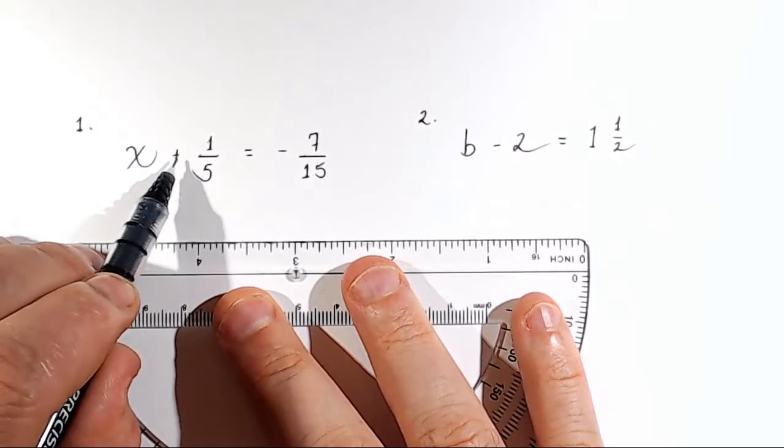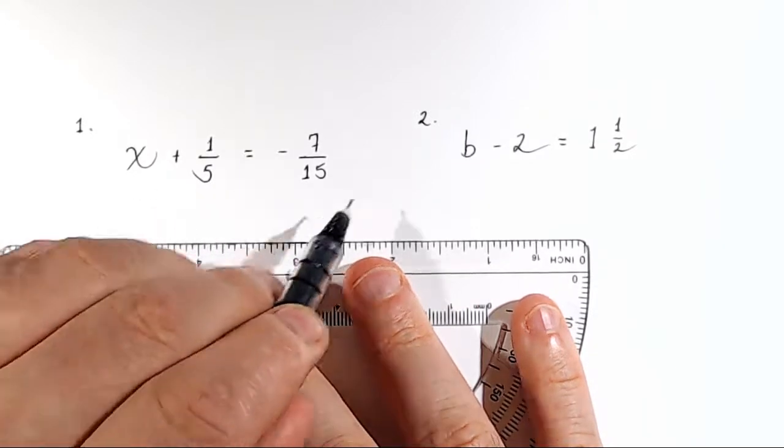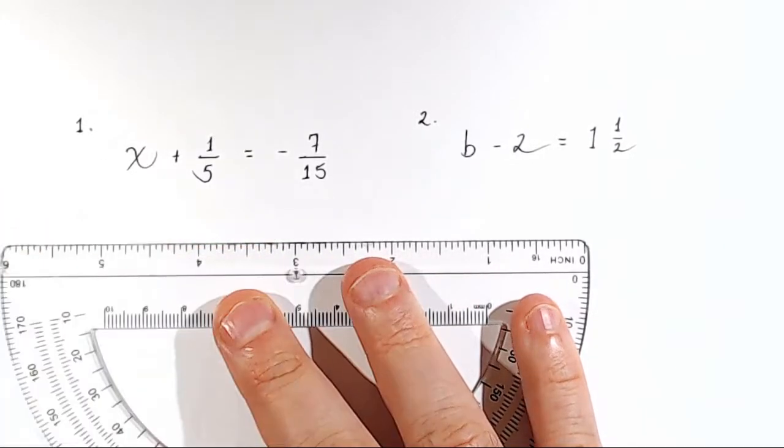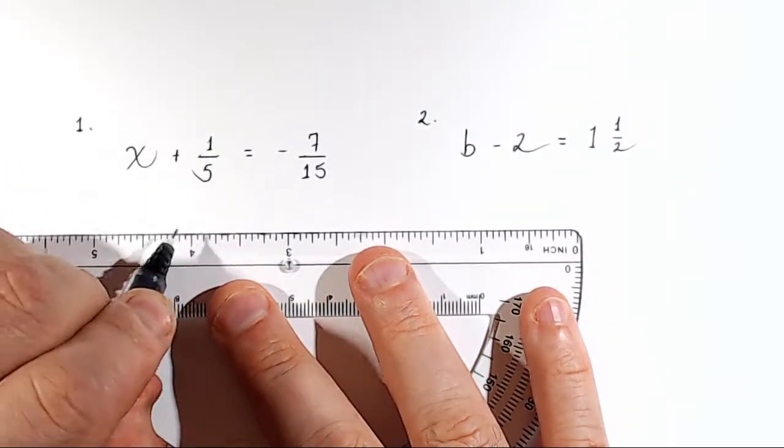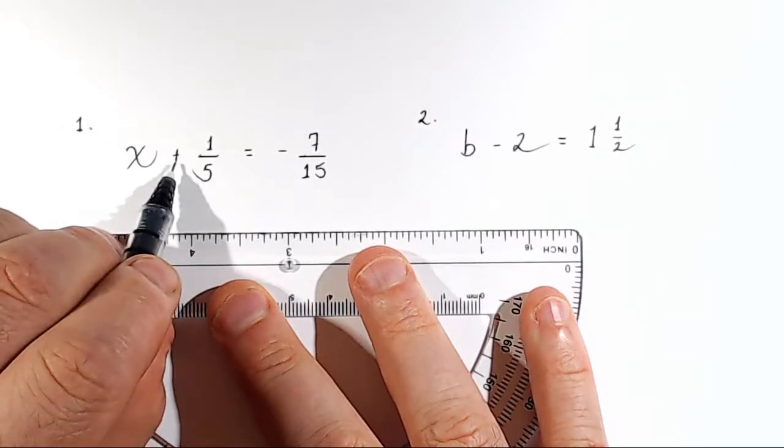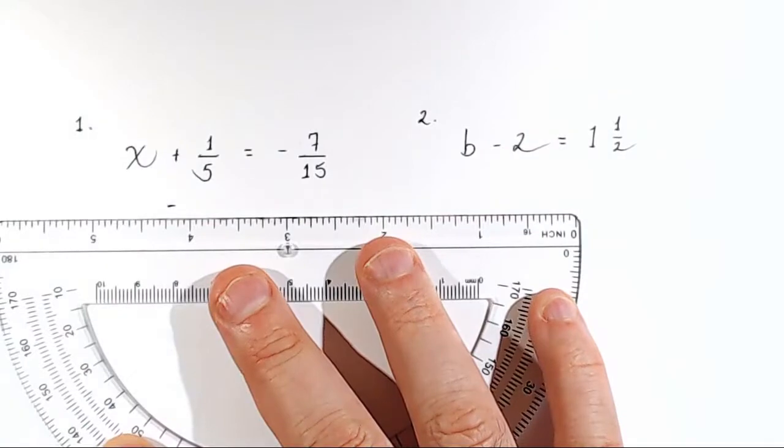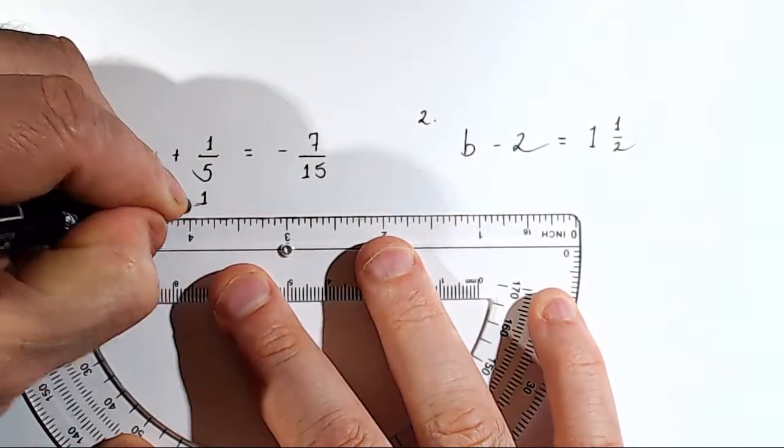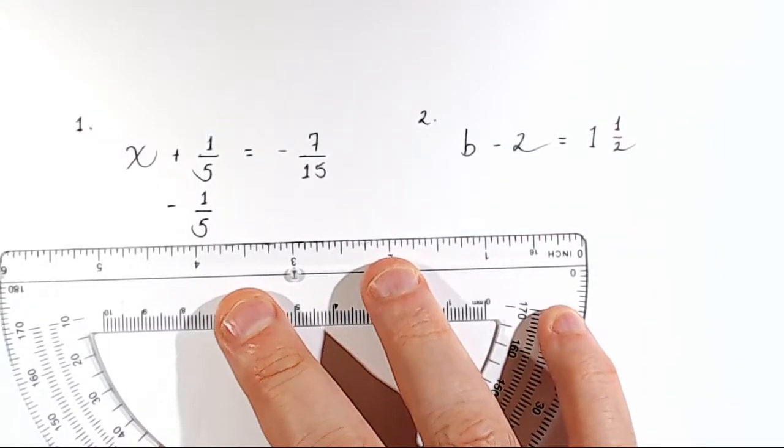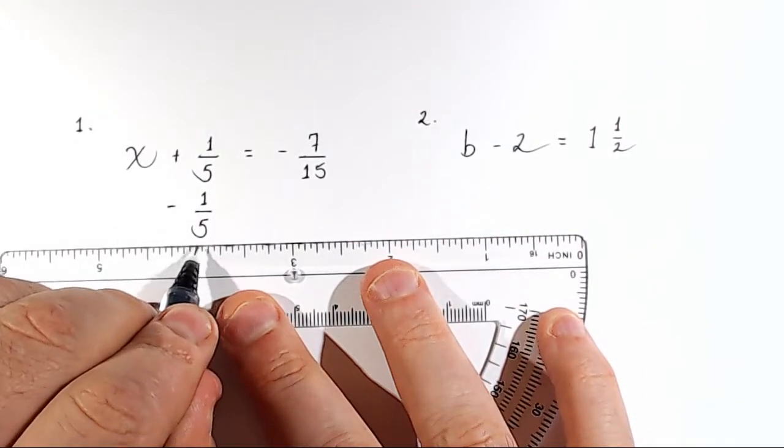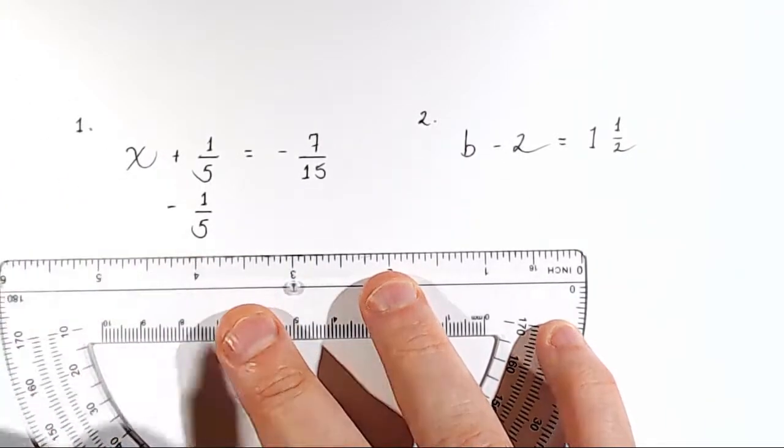Right now, one-fifth is being added to x. So in order to move it to the right side of the equation, we have to do the opposite operation to whatever is being performed. So right now, it's being added. So we do a subtraction. We subtract one-fifth. And remember, what we do to one side, we must do to the other side in order to keep the equation in balance.